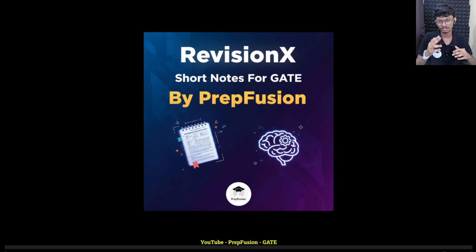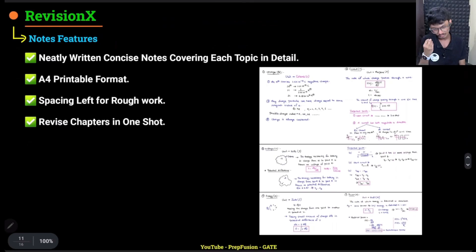Okay, so we have launched another feature on our channel, that is the RevisionX. RevisionX are the short notes for GATE. These are from PrepFusion. So what are these notes basically? These are neatly written concise notes covering each topic in detail. They will not comprise of more than 10 pages or 15 pages for maybe three chapters. A single chapter can be covered in three to four pages.